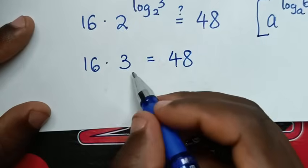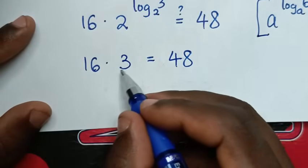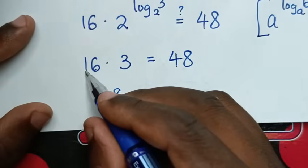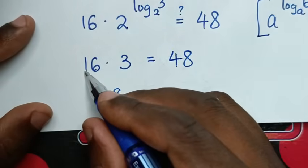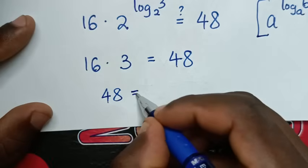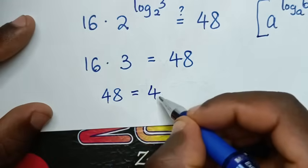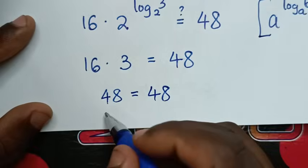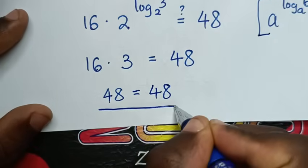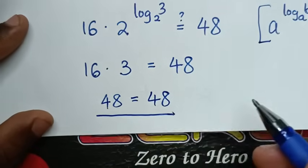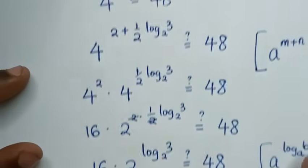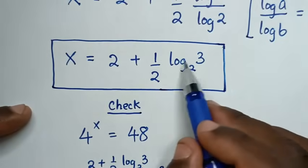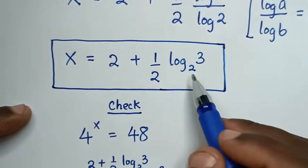16 times 3: 3 times 6 is 18, carry 1; 3 times 1 is 3, plus 1 is 4 — so it is equal to 48. Left side and right side are equal, so it is true. The value of x is 2 plus a half log of 3 base 2.